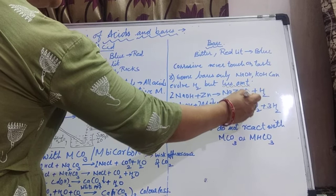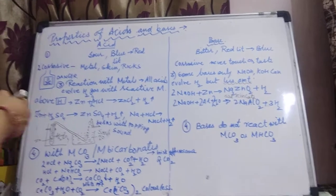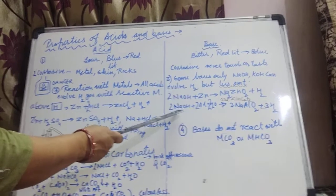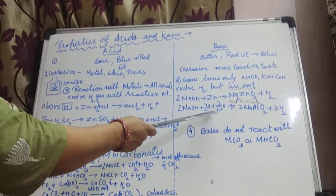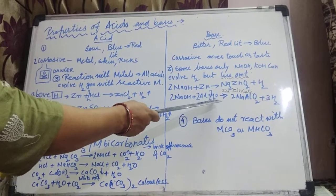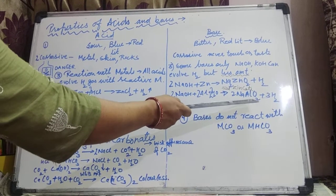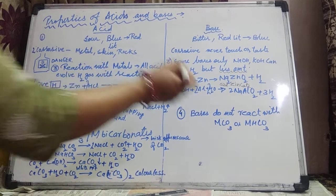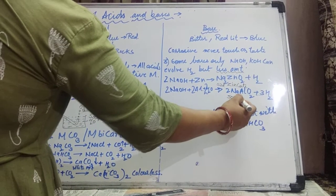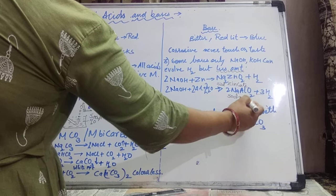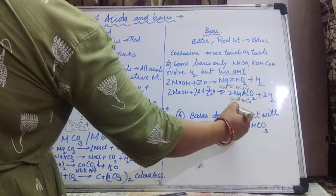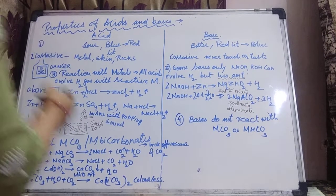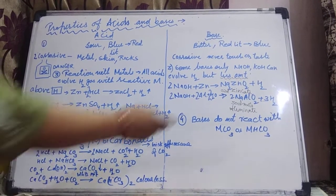This is very important students — it can be asked in your board exam. NaOH if reacting with aluminium in presence of water, we are getting sodium meta-aluminate, NaAlO₂. And hydrogen gas is evolving out.